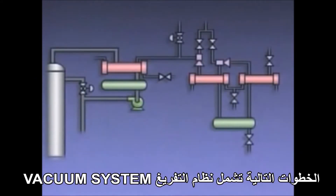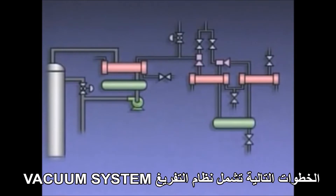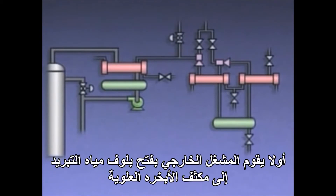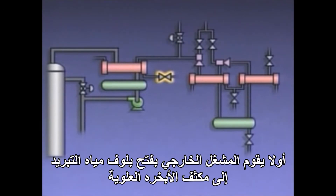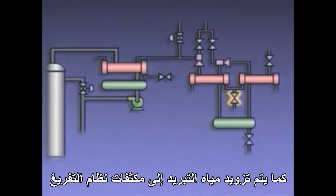The next steps involve the vacuum system. First, the outside operator opens a valve to supply cooling water to the overhead vapor condenser and one to supply cooling water to the vacuum system condensers.